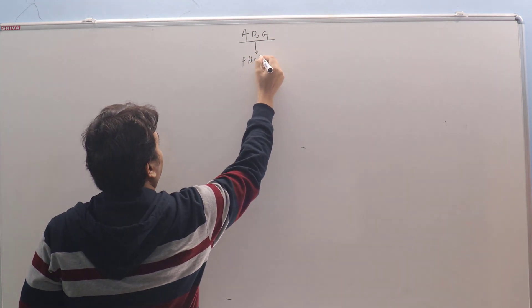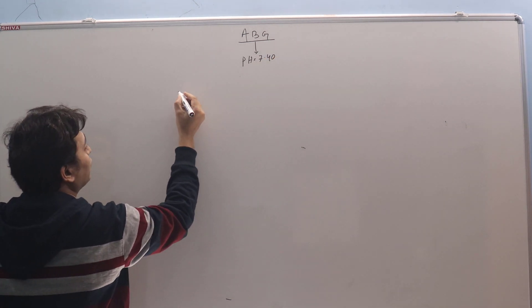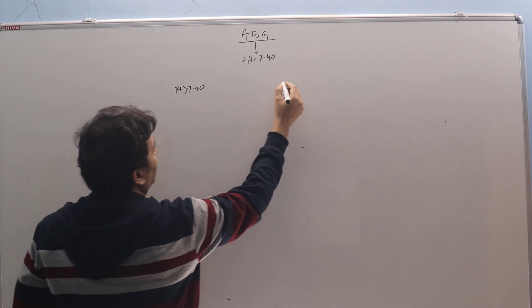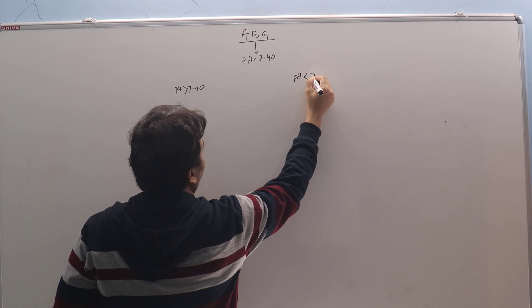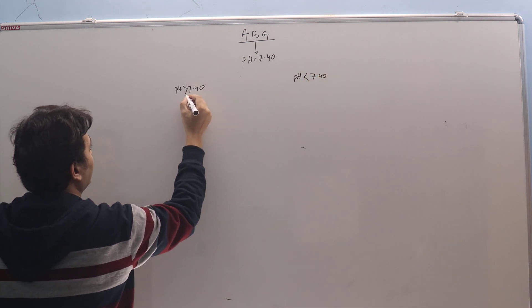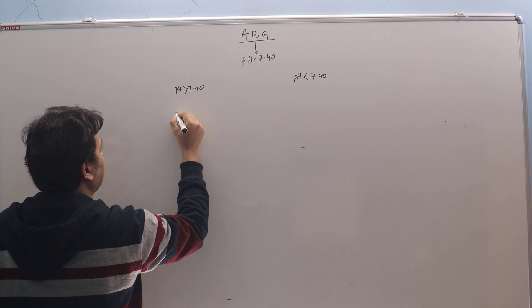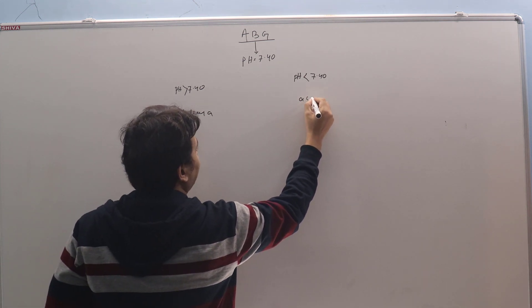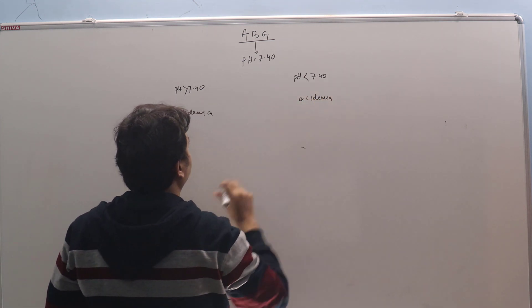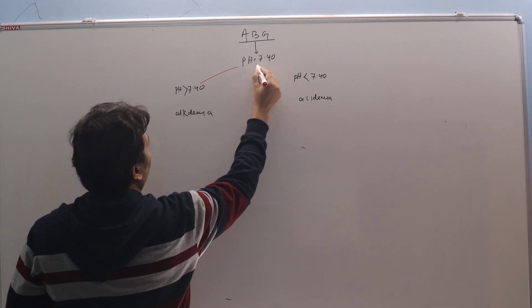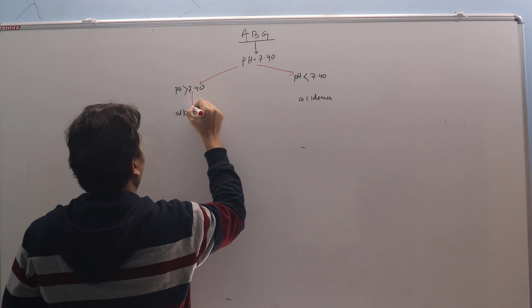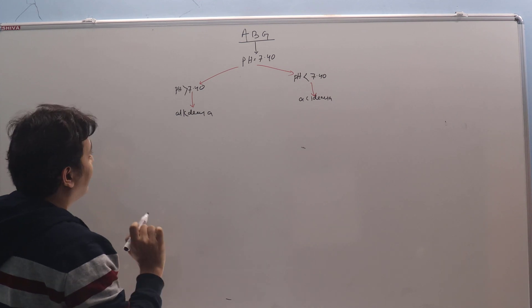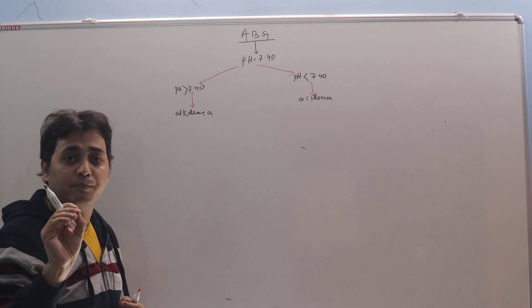So let's go straight into it. For practical purposes, we'll take pH 7.40. So there can be two possibilities: pH becoming more than 7.40 or pH becoming less than 7.40. More than 7.40 we'll call this as alkalemia, and this we'll call it acidemia.